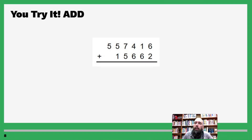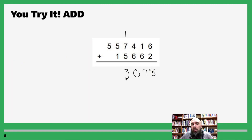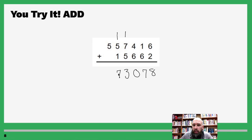Welcome back, let's get to it. Six plus two is eight — nothing to carry over. One plus six is seven — nothing to carry over. Four plus six is ten — write out your zero, carry a one. One plus seven is eight, eight plus five is thirteen — carry the one. One plus five is six, six plus one is seven — nothing to carry over. Five plus nothing is just five. One-two-three digits, comma, one-two-three digits — and you're done.